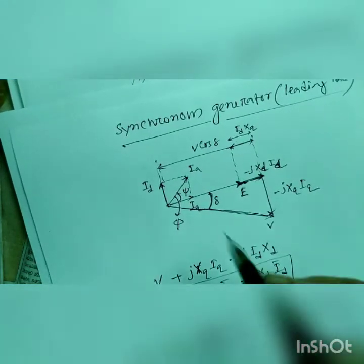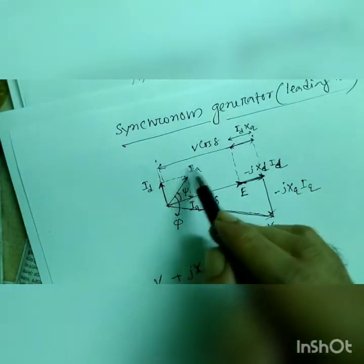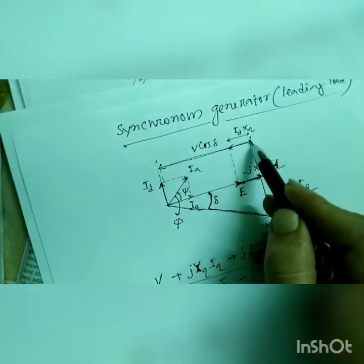Just simple, if you observe it, then you will get the answer. This total length is v cos delta, this total length.